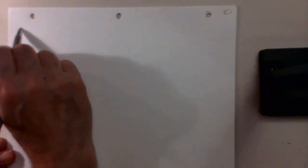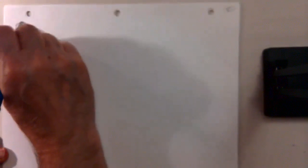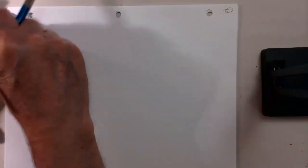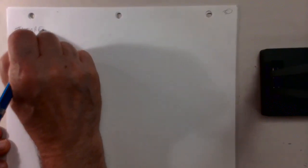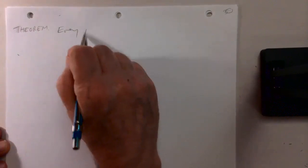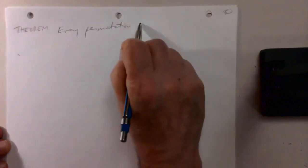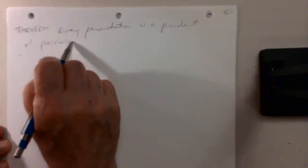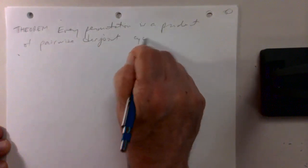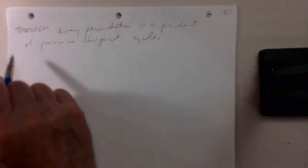Theorem: Every permutation is a product of pairwise disjoint cycles. Before proving it, let me give an example.